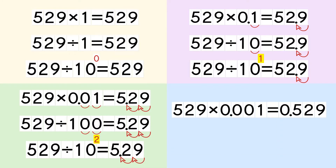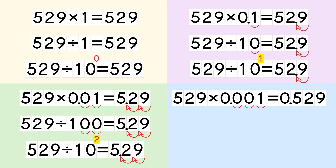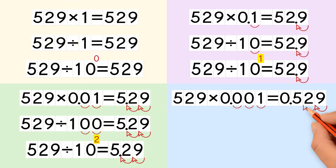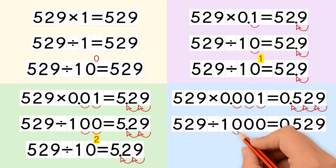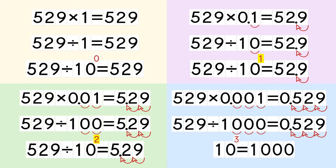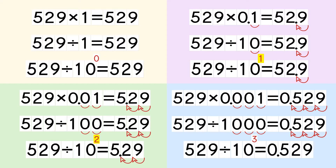When we multiply a number by 0.001, we move the decimal point 3 places to the left. Multiplying by 0.001 is the same as dividing by 1000. When we divide a number by 1000, we move the decimal point 3 places to the left. 1000 equals 10 to the power of 3, so when we divide a number by 10 to the power of 3, we move the decimal point 3 places to the left.